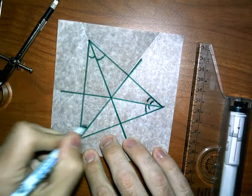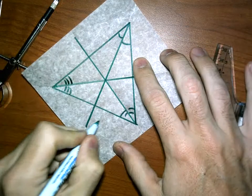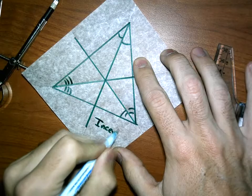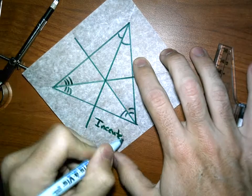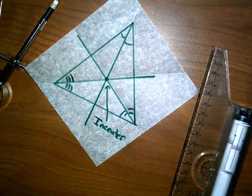And all three of these meet at a point. That point of concurrency we call the in-center. So the three angle bisectors meet at the in-center.